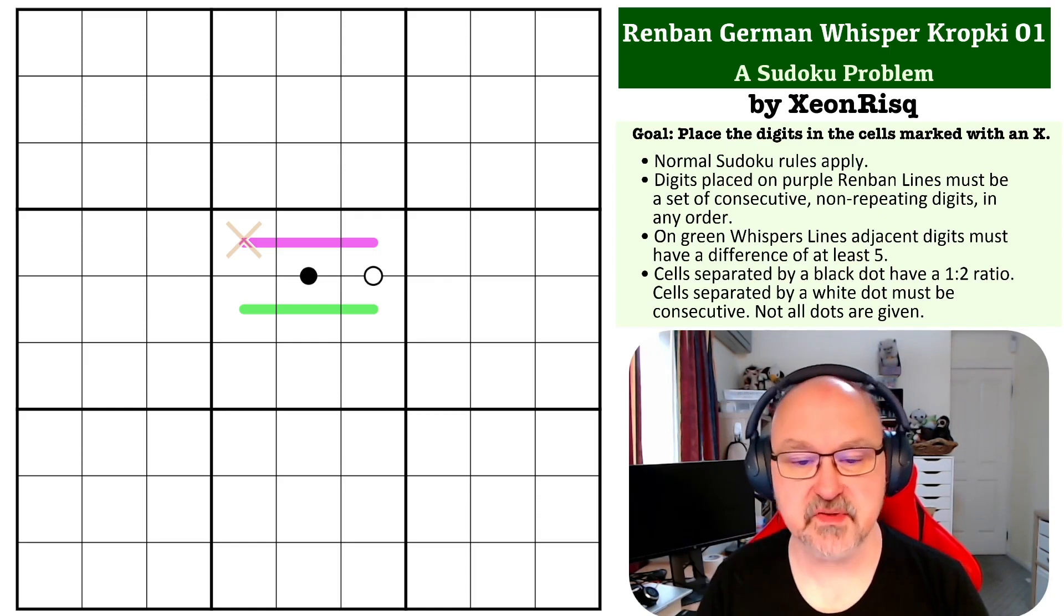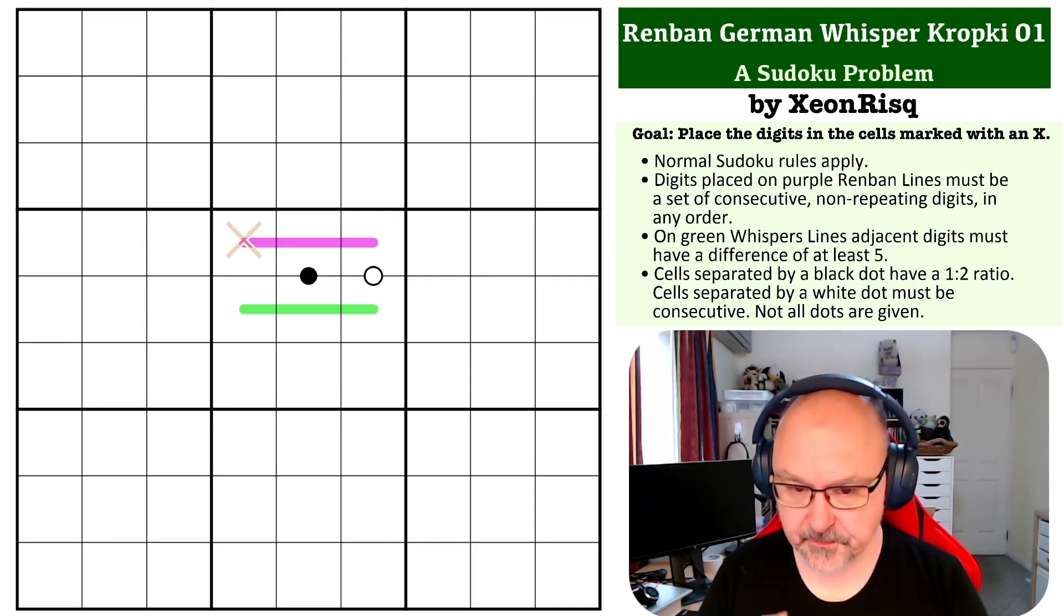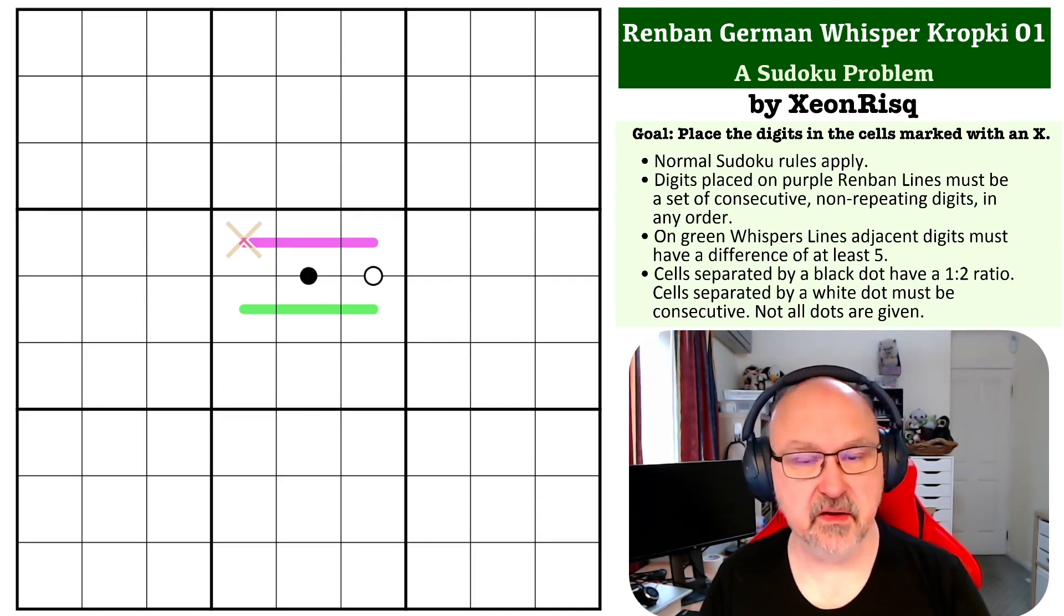I'll explain the rules. The goal on this one is to place the digit on the beige X. There are three rules in play. There is a Renban line, which must contain a set of consecutive non-repeating digits in any order. There is a green whisper line, which adjacent cells on the line must have a difference of at least five.